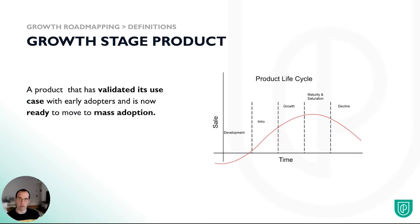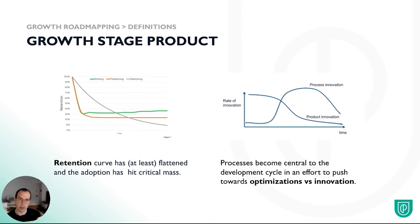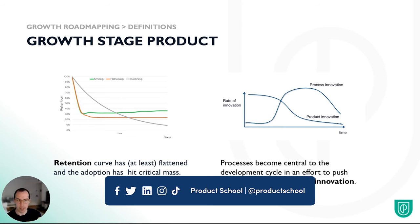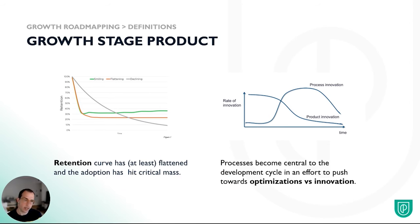A little bit more nuanced is the definition of a growth stage product. A negative way of defining it is to say it's a product that is not zero-to-one and not declining either. More positively, it's a product that has validated its use case, probably with early adopters, and is ready for mass adoption — entering growth stage. The retention curve has flattened, you've found a core use case and core set of users. This means you'll likely see an increase in process innovation and a decrease in product innovation, because optimization is safer, has less risk, and is more likely to give you outcomes. Since you've already achieved market fit, you don't want to jeopardize that by taking big swings.